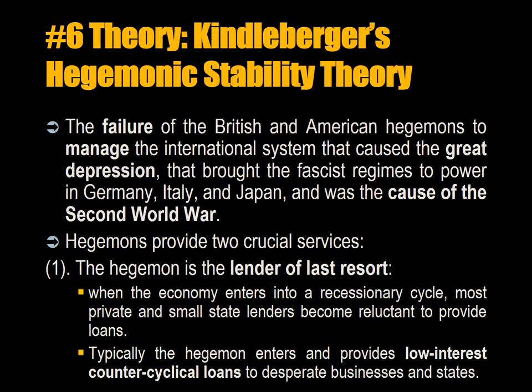Hegemons provide two crucial services to maintain the international political economy. First, the hegemon is the lender of last resort. When the economy enters into a recessionary cycle, most private and small state lenders become reluctant to provide loans. Typically the hegemon enters and provides low interest counter-cyclical loans to desperate businesses and other small states. In the 1870 Great Depression, this is precisely what the English did — they extended credits from banks to keep the economy going. In the short term the English had to pay for this, but in the long term the British benefited because the system created markets that bought British goods.